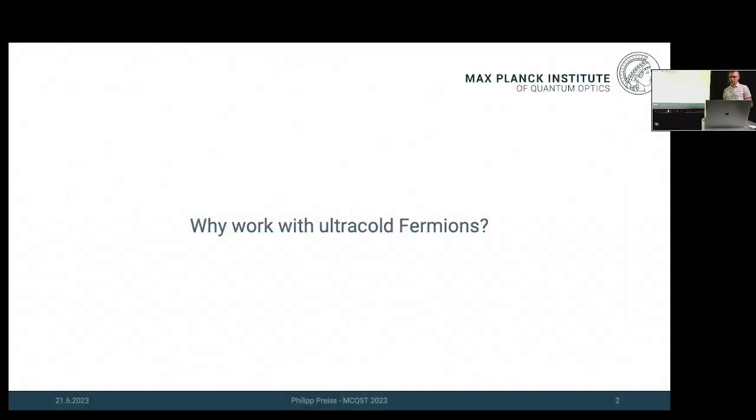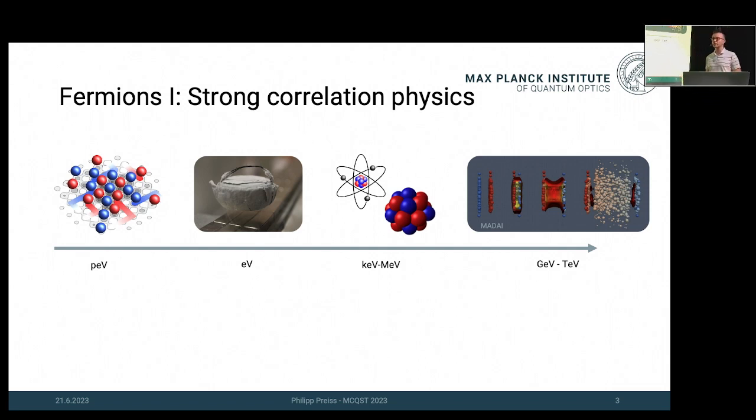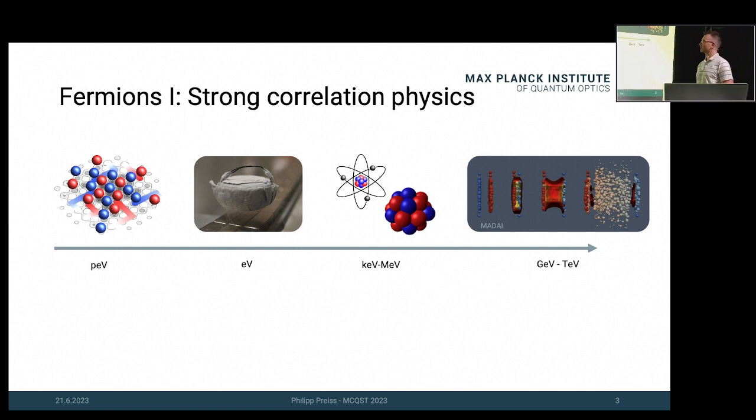Before I talk about details, let me zoom out a little bit and ask this question: why do we care specifically about working with ultra-cold fermionic systems? There's the fundamental academic interest in strongly interacting Fermi systems. We can look at very different systems at very different energy scales and we often find difficult fermionic problems. We can look at systems in the thermodynamic limit at the electron volt scale in condensed matter systems, or at smaller systems at higher energies in atomic and nuclear physics, or at extremely large energy scales in relativistic heavy ion collisions.